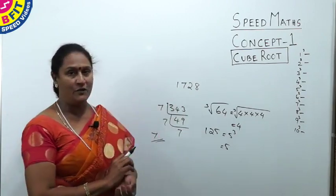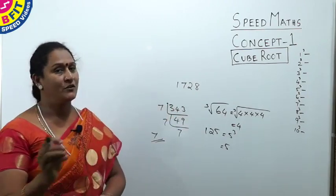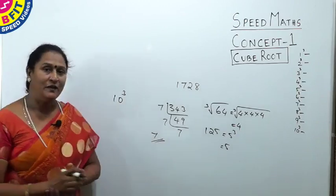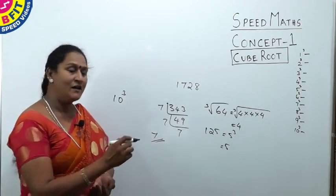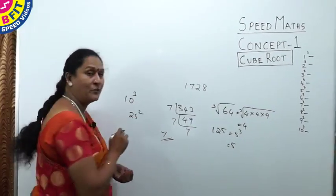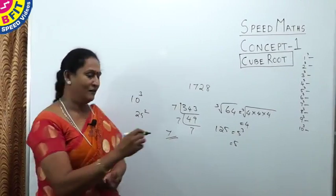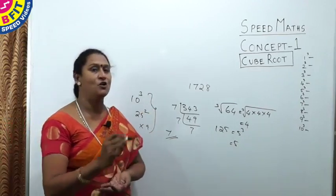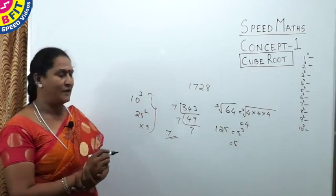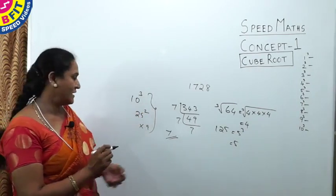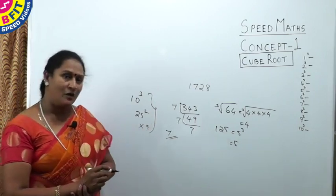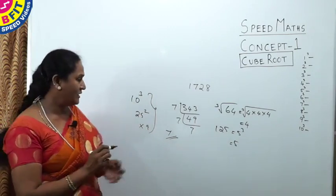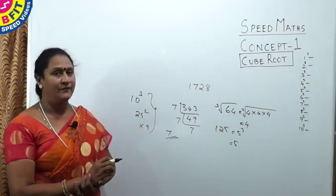To find the cube root as soon as you see the number, you should know at least the cubes of the first 10 numbers. For any exam, be thorough with cubes of the first 10 numbers, squares of numbers up to 25, and tables up to 9. When you are thorough with these, you can easily crack any competitive exam quickly.